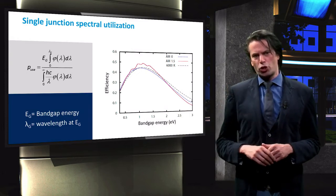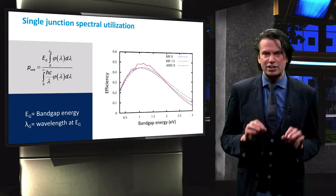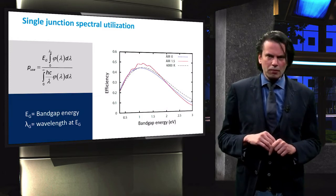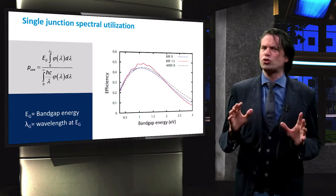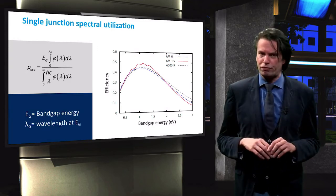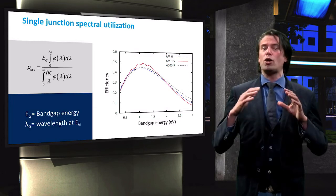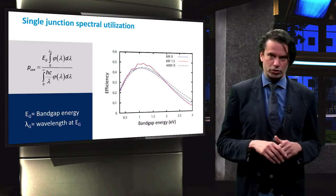This figure shows the fraction of usable energy as a function of the band gap energy of the material. The usable fraction is also known as the ultimate conversion efficiency, since it is the efficiency of the solar cell without absorption or collection losses.